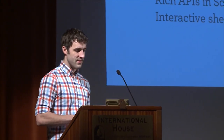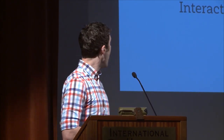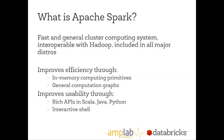Let's start off with a high-level overview of Spark in general. This will be pretty brief for those of you who are familiar, but I just want to make sure everybody's on the same page. So, what exactly is Apache Spark? Basically, the right way to think about this is it's a fast and general computing engine. It's completely interoperable with Hadoop — you can read your data from HDFS, from Hive, from S3, and it's included in all major distributions.